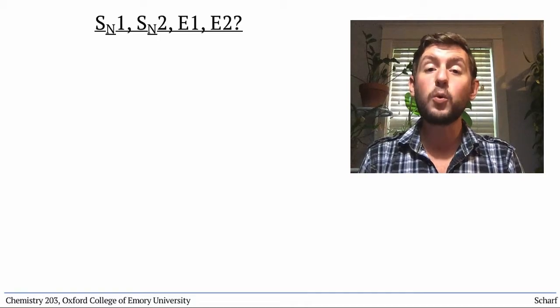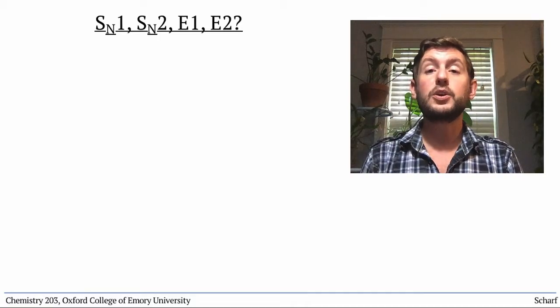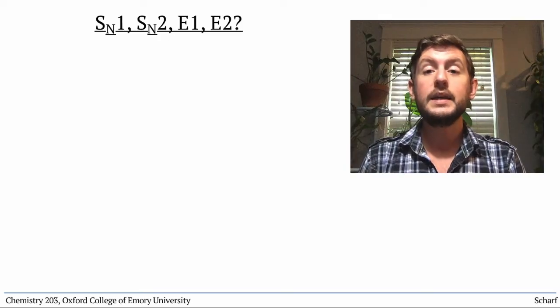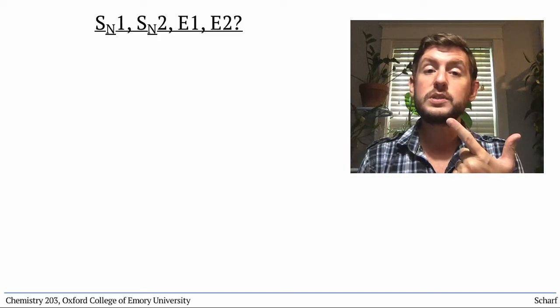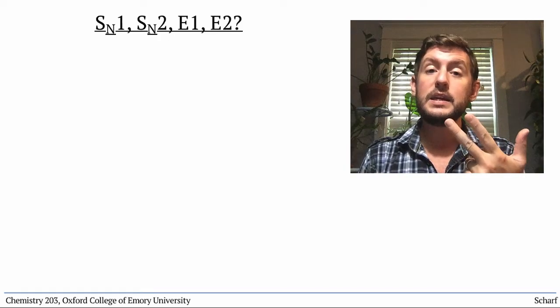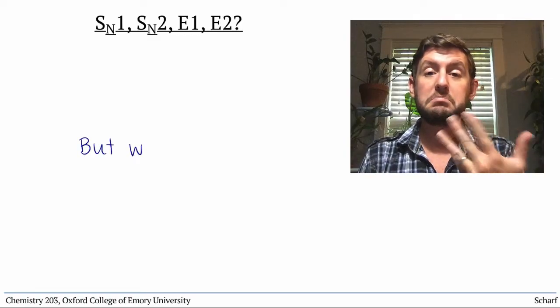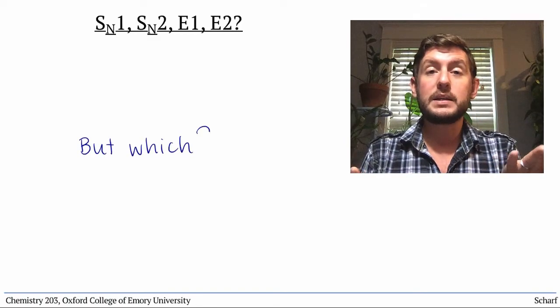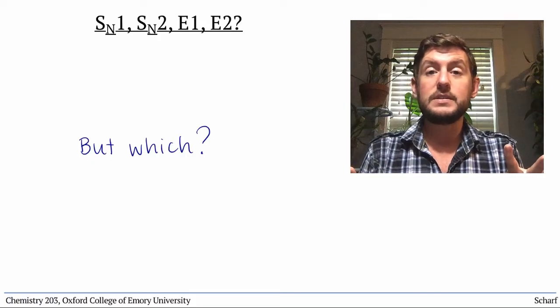So now we've learned four types of reactions that can occur for alkyl halides: the SN1 and SN2 substitution reactions, and the E1 and E2 elimination reactions. How do we know which reaction and mechanism will operate under a given set of circumstances?